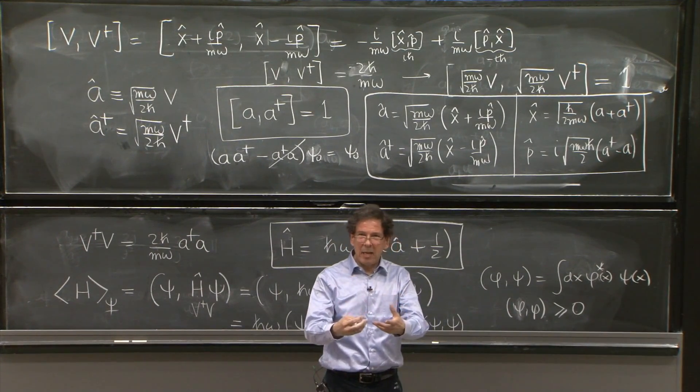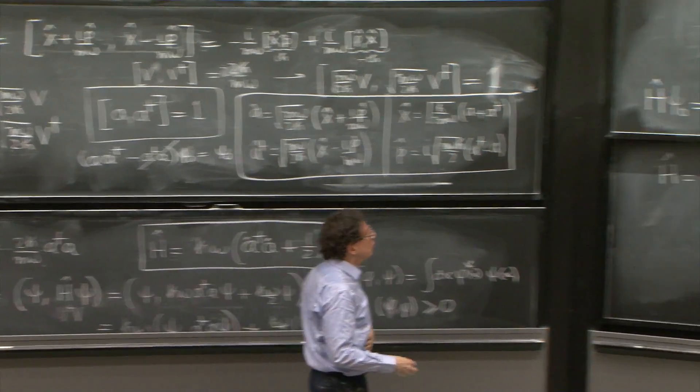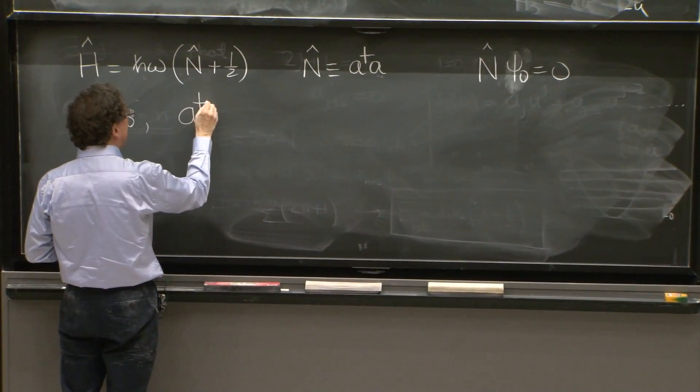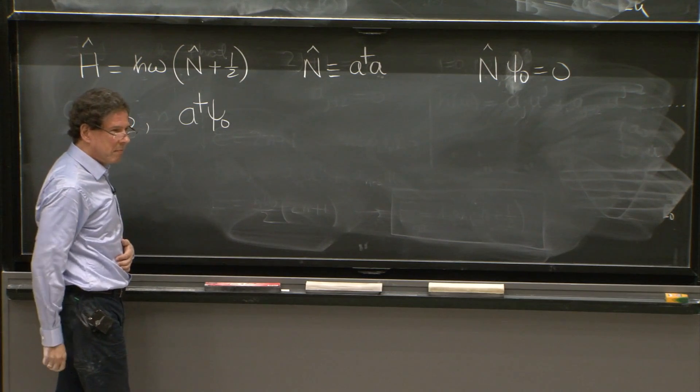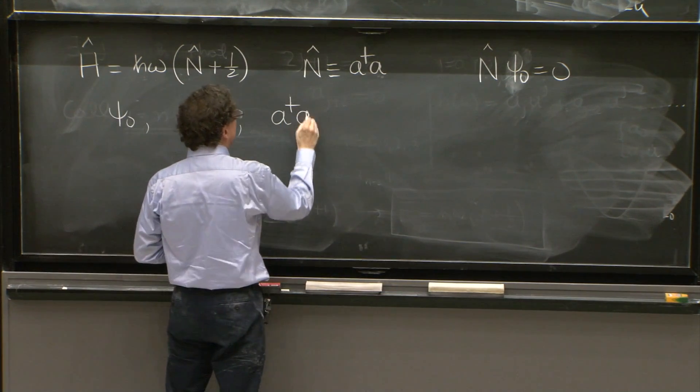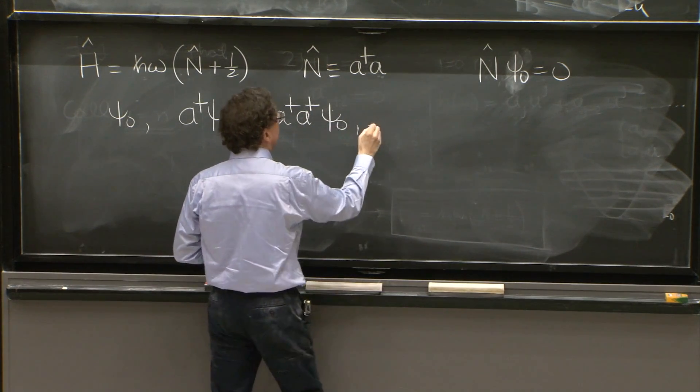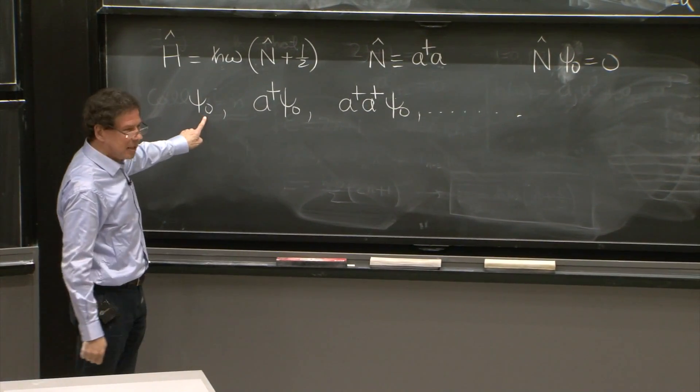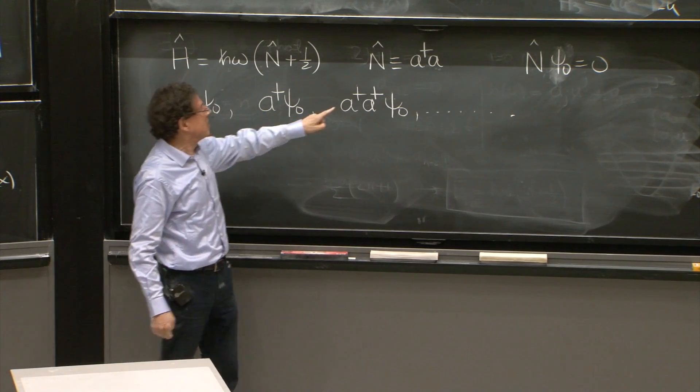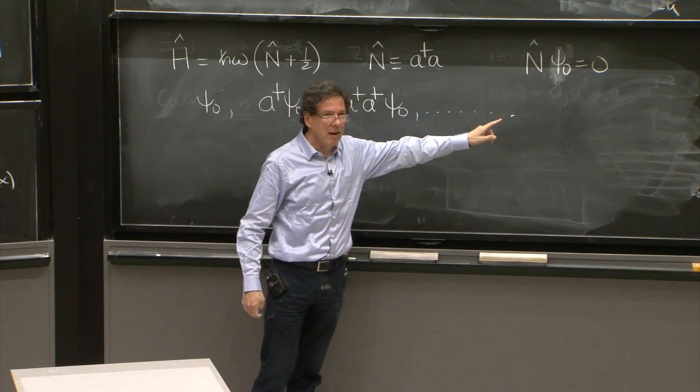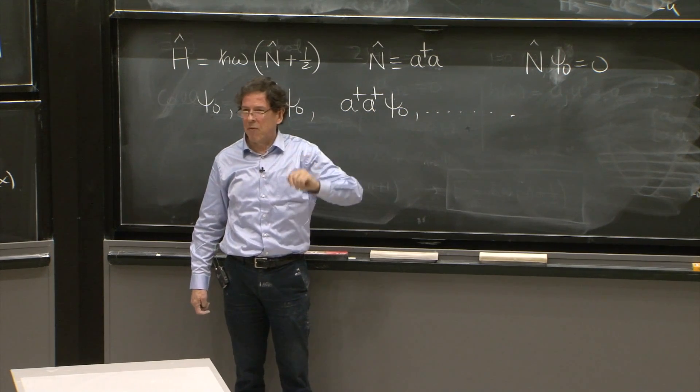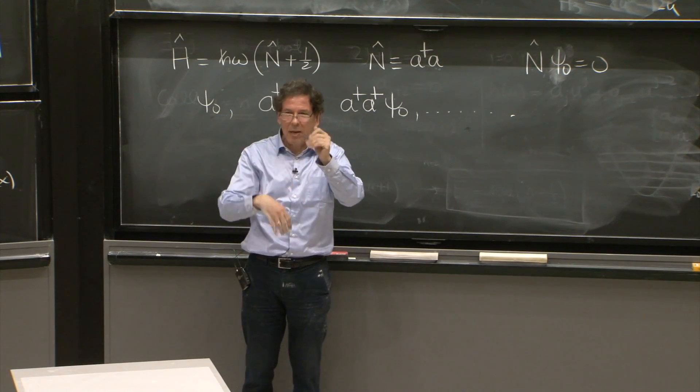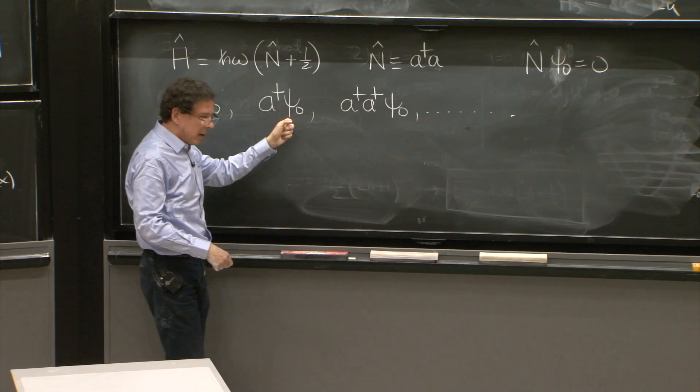Since it doesn't kill it, it's called a creation operator. So you have this state, but now there's also the state a dagger acting on the vacuum. And there's the state a dagger a dagger acting on the vacuum. And all those. And what we will figure out next time is that, yes, this is the ground state, and this is the first excited state. And this is the second excited state. And those are forever. So we'll have a very compact formula for the excited states of the harmonic oscillator. They're just creation operators acting on the ground state or the vacuum.